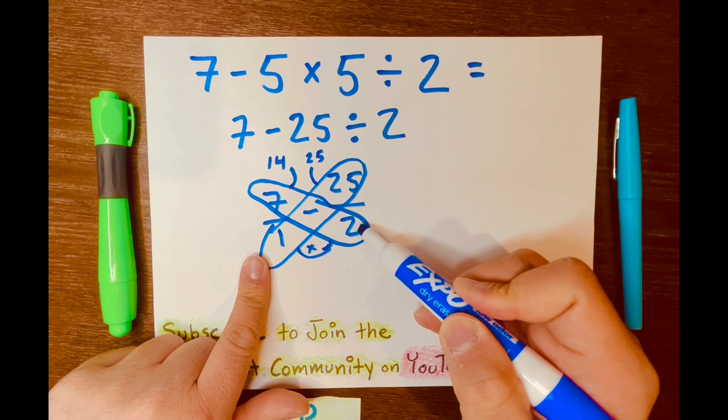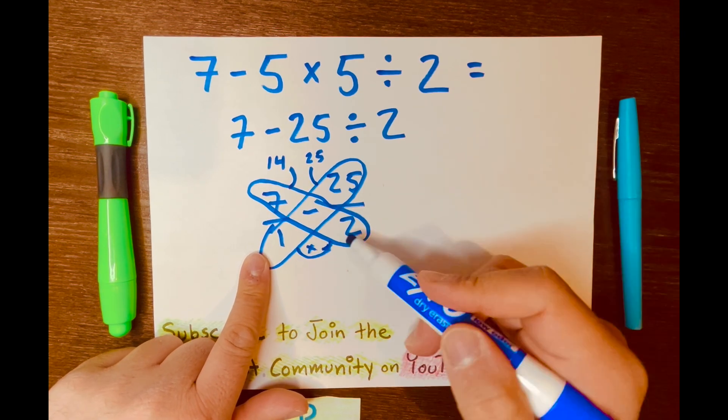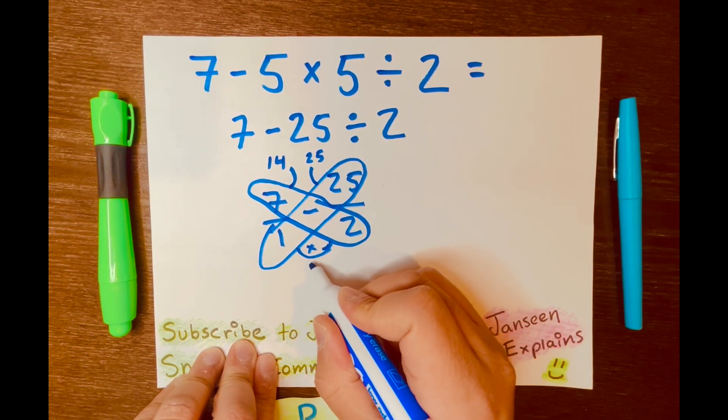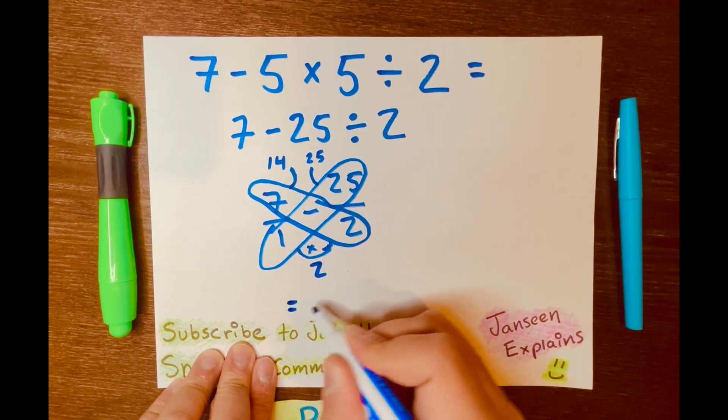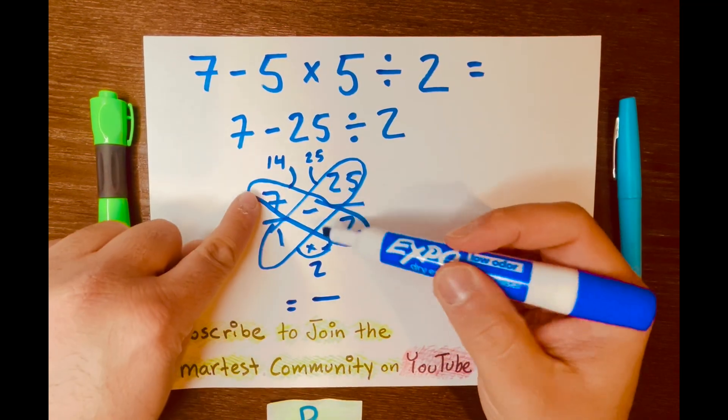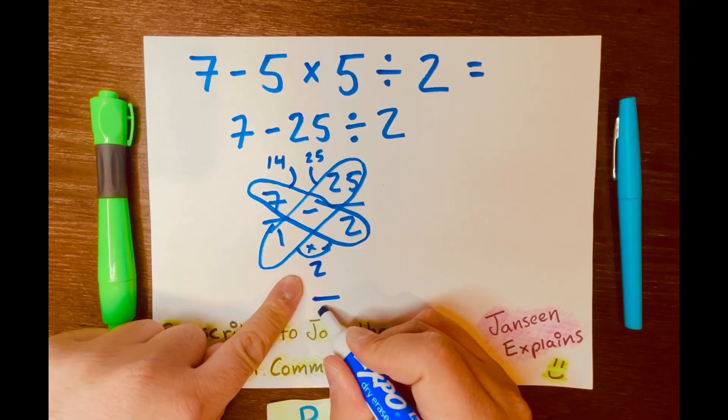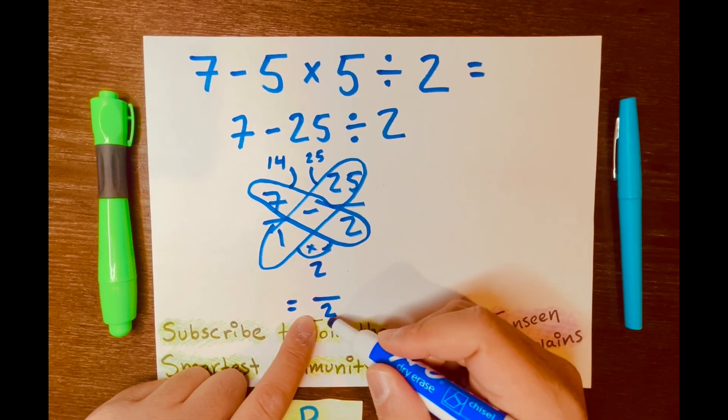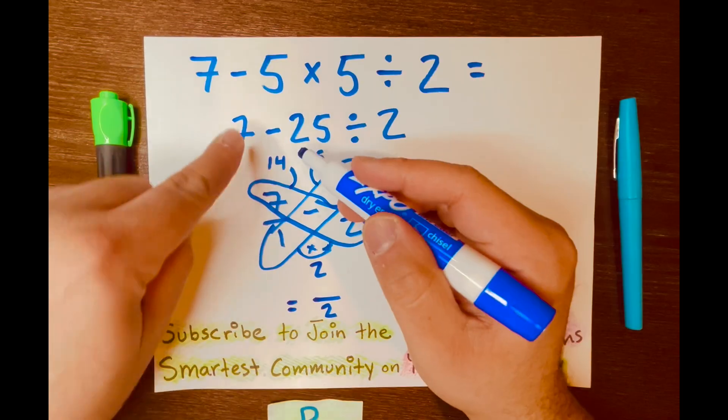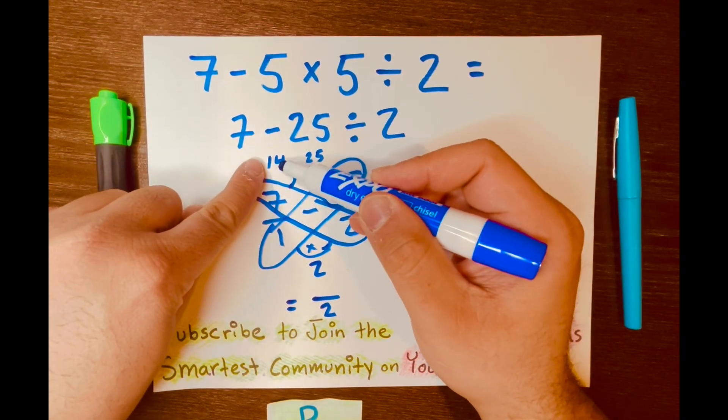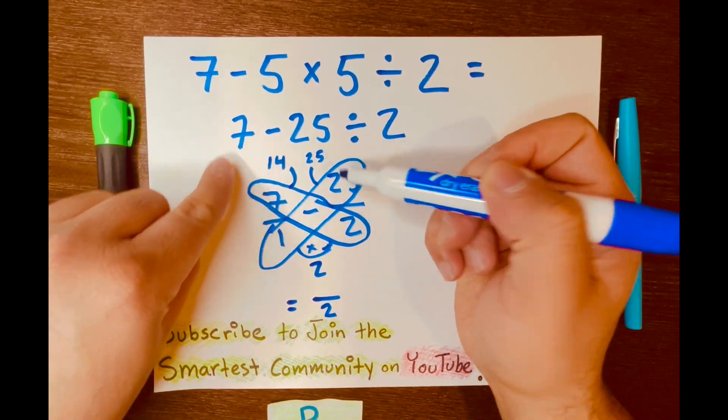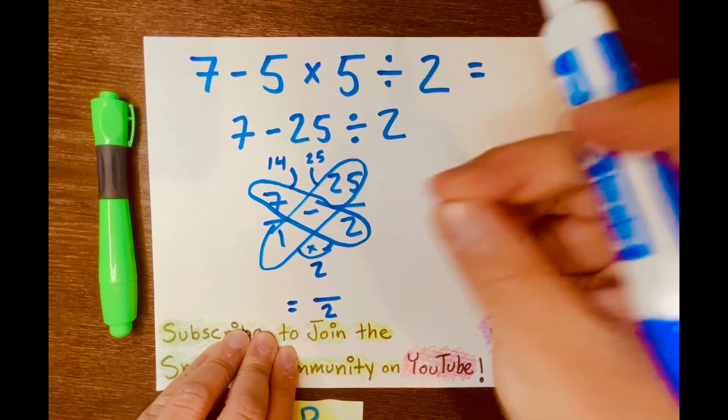And 1 times 2 equals 2, or 2 times 1 equals 2. So we write the 2 at the bottom of this fraction bar. That is called the denominator. And next, we are going to subtract 14 minus 25.